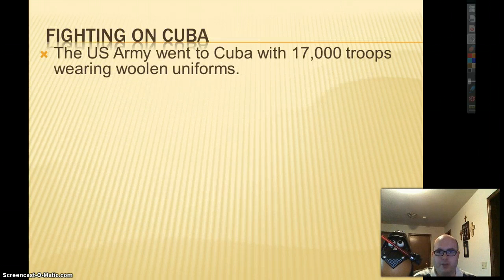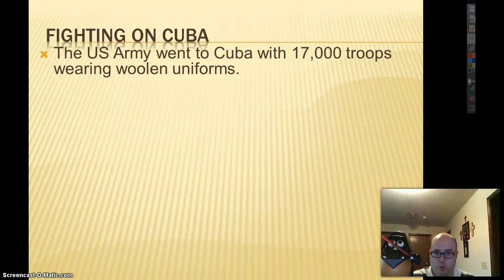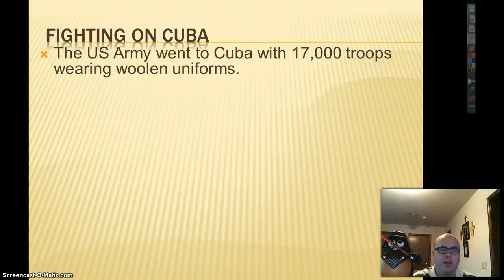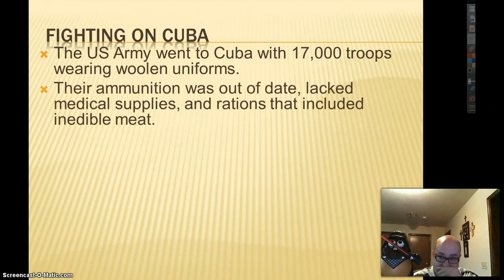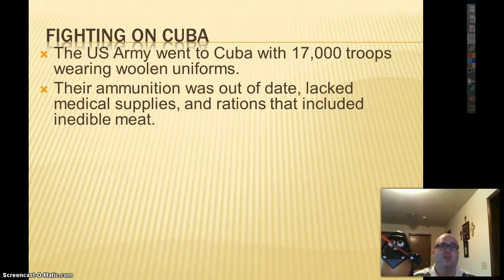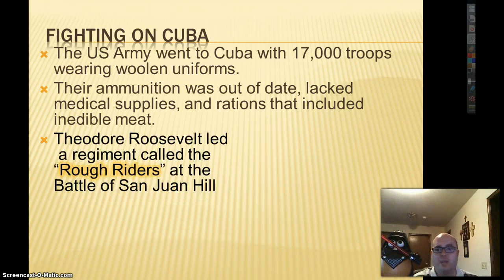Fighting on Cuba: the U.S. Army sent 17,000 troops wearing wool uniforms left over from the Indian Wars. It's cold up in North Dakota, so they had wool uniforms, but it's hot in Cuba — not ideal for hot and humid conditions. Their ammunition was out of date, they lacked medical supplies, and rations included inedible meat. Things were not looking good; the U.S. came in unprepared.